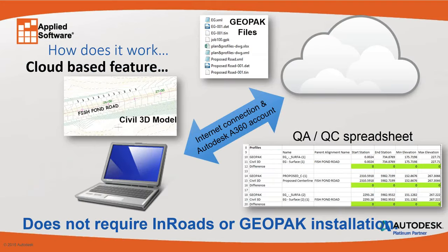So how does it work? It doesn't require you to have InRoads or GeoPack installed. You just need Civil 3D and then export the data out with the data translator, and it will handle the spreadsheet and the files that are converted. Since most of us work with consultants who use GeoPack and transportation modeling and want to share data back and forth, the Civil Engineering Data Translator addresses that.